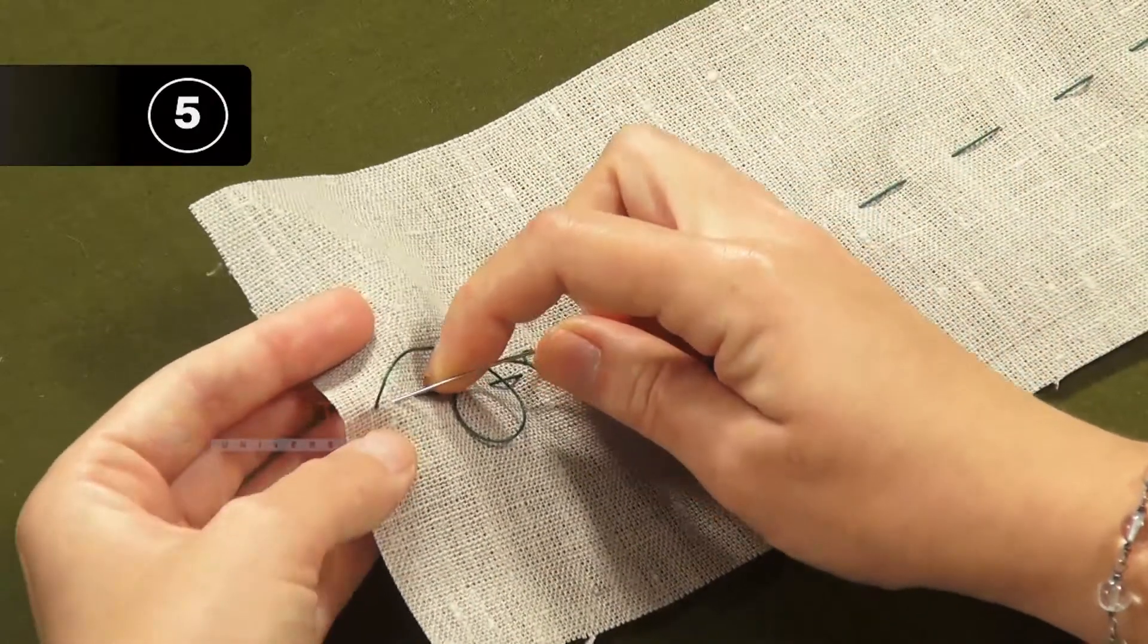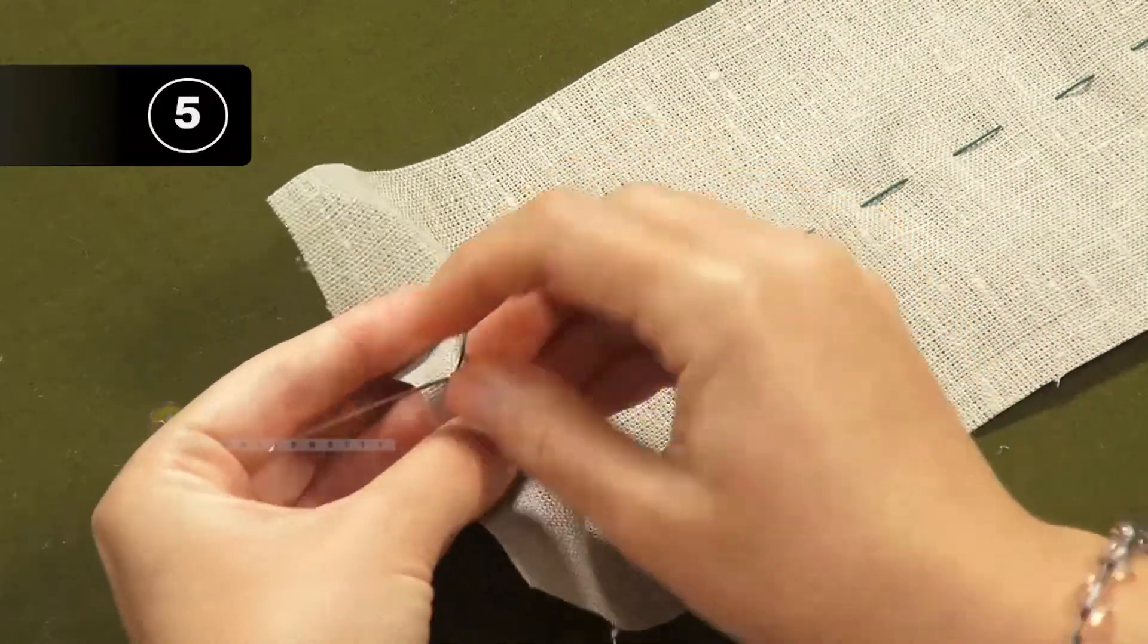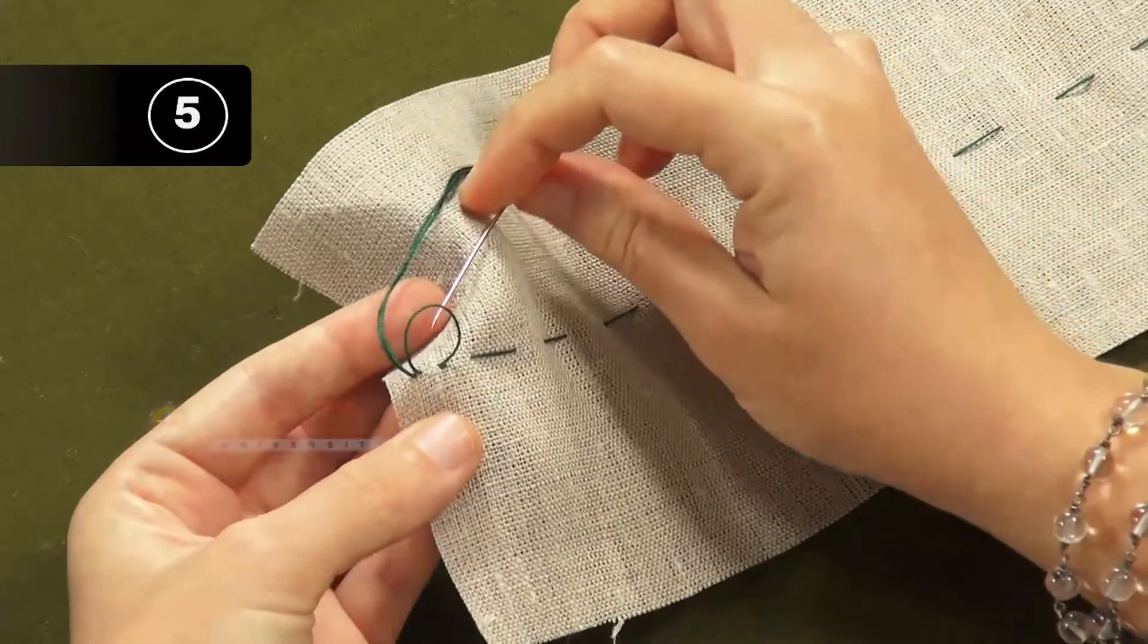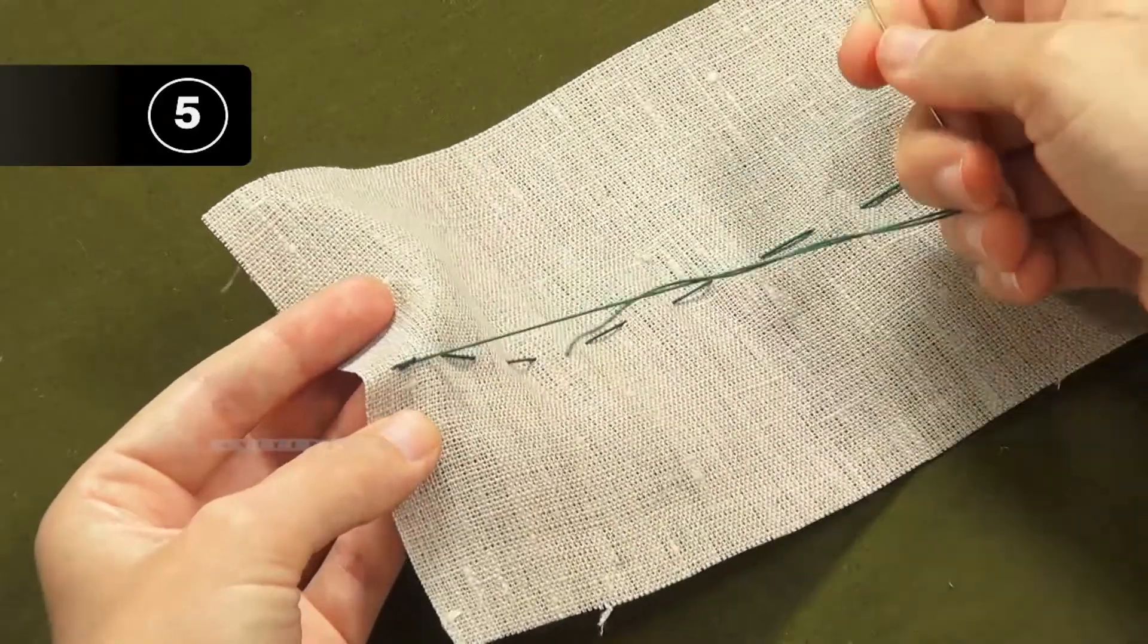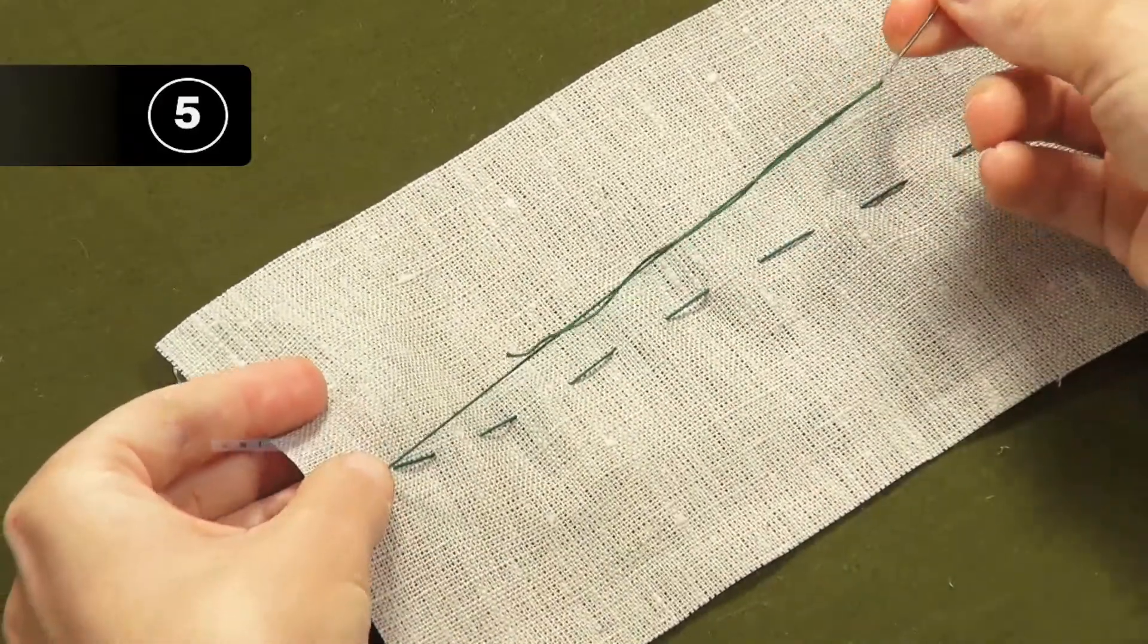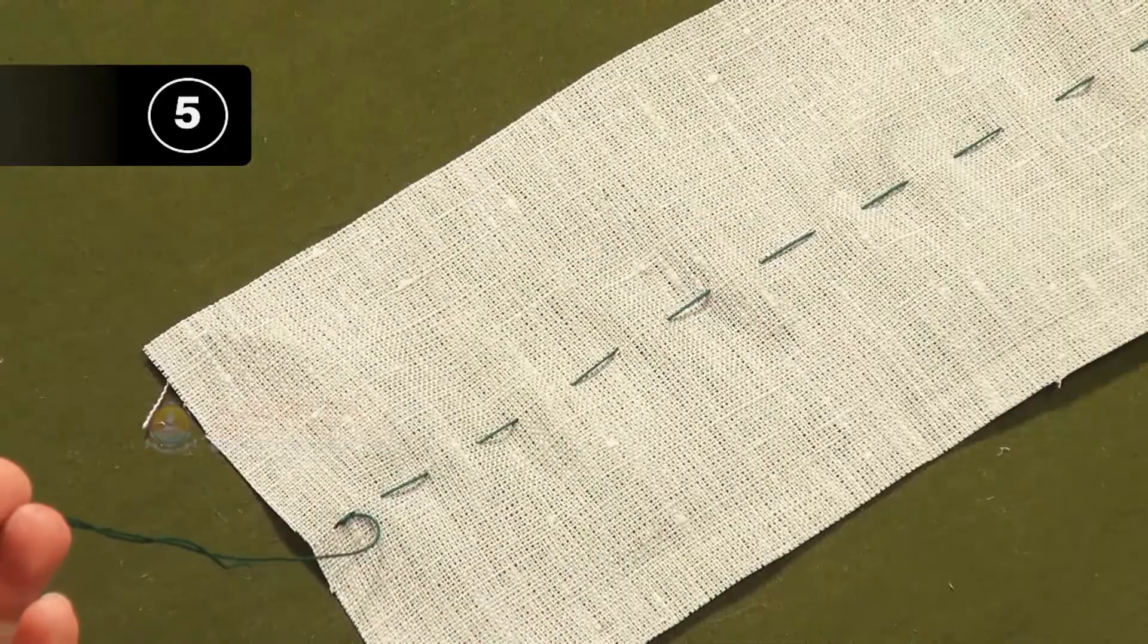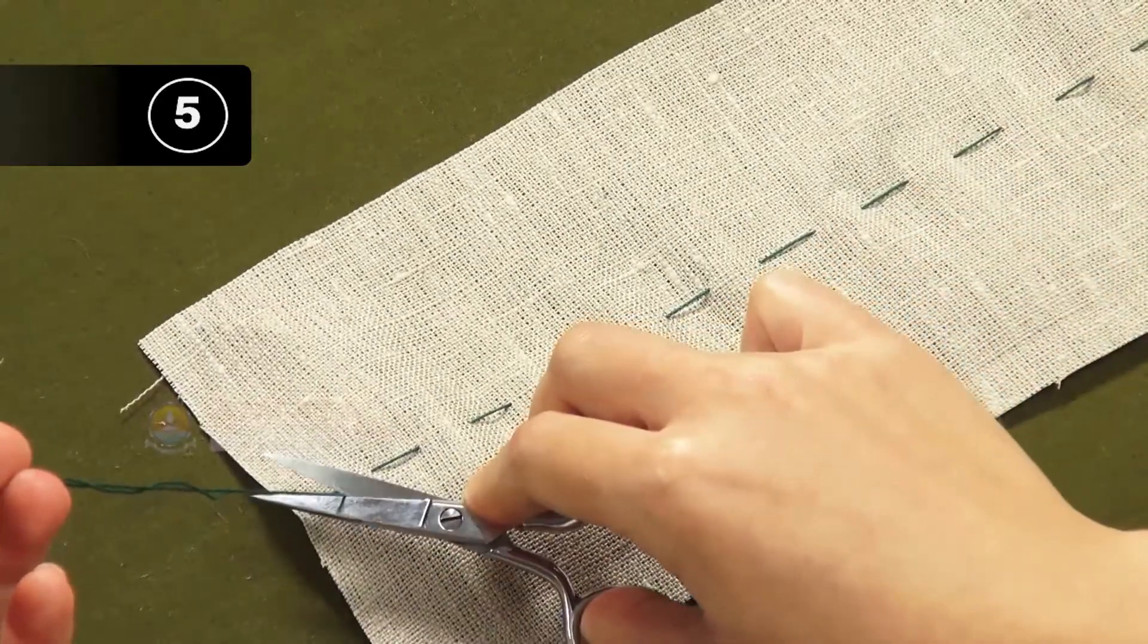Step 5: End a line of tacking with one backstitch and tie a knot by taking a small stitch and inserting the needle through the loop, pulling it and securing the knot. Snip the thread with a scissor.